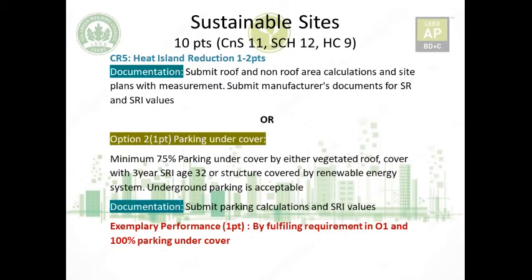Alternatively, instead of option one's roof and non-roof measures, you can put a minimum of 75% of parking under cover — covered by a vegetative roof, a three-year aged SRI of 32 material, a renewable energy system, or underground parking. You must submit parking calculations and SRI values for materials used. Exemplary performance is earned by fulfilling option one requirements and placing 100% of parking under cover for a bonus point.